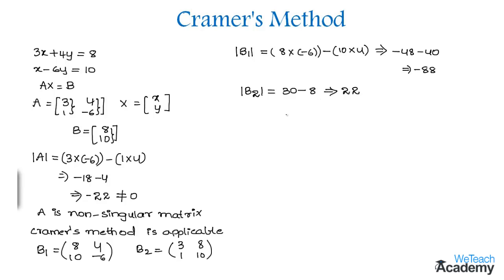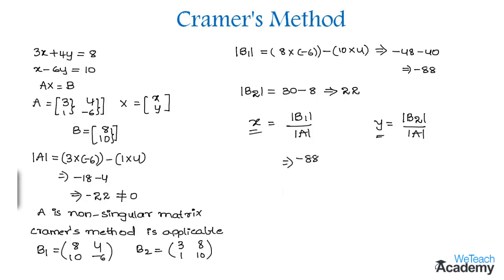Now let us write the solutions for the given set of equations. The value of x equals the determinant of matrix b1 divided by the determinant of matrix A. The value of y equals the determinant of matrix b2 divided by |A|. Substituting the values, x = -88 divided by -22. The negatives cancel and we get x = 4.